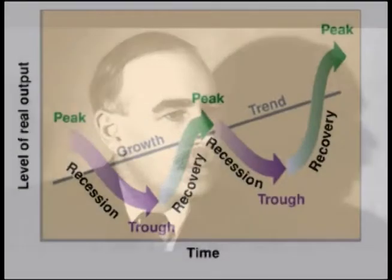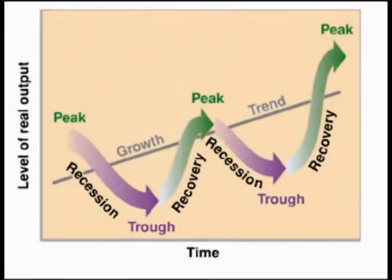The concept of fiscal policy started in 1936 when a British economist named John Maynard Keynes wrote a famous book titled The General Theory of Employment, Interest, and Money. In his book, Keynes presented a new economic theory now known as Keynesian economics. Keynes theorized that the government could minimize the extreme highs and lows of the business cycle by influencing the level of total spending in an economy.